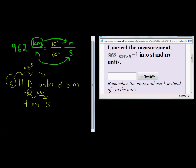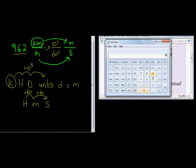And in the numerator 10 cubed. So we have to multiply that number with 10 to the power of 3 and divide with 60 to the power of 2. What do we get? Well, let's look at our calculator. If we take 962 times 10 to the power of 3 divided by 60 to the power of 2, we get...